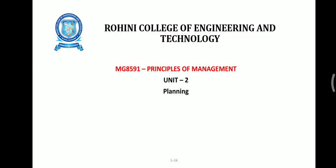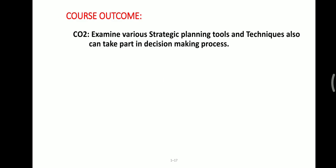Welcome to the course MG 8591 Principles of Management, Unit Number Two: Planning. At the end of this section, you will be able to know the strategic planning process and techniques, and also take part in the decision-making process.